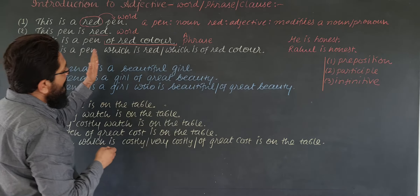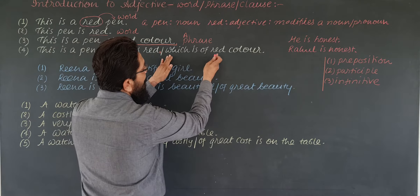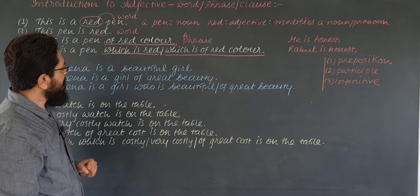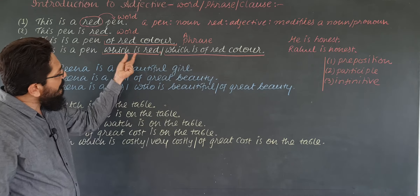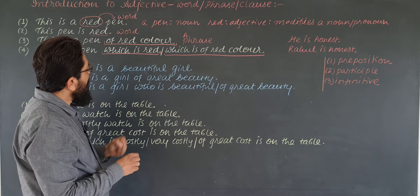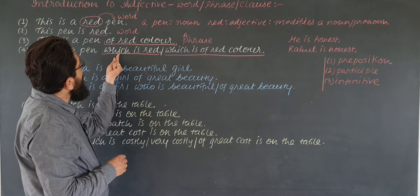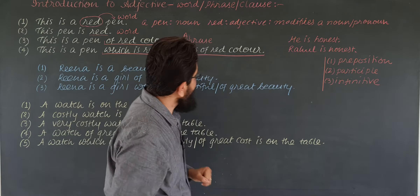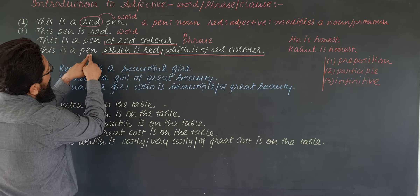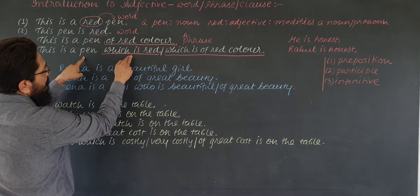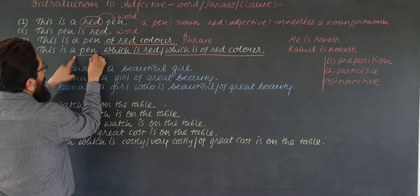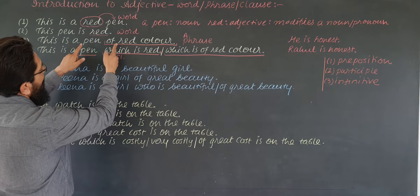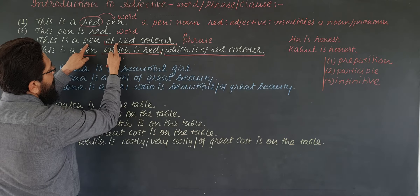Now read this sentence: 'This is a pen which is red, or which is of red color.' See — 'which is red' is a group of words, but here there is a subject-verb combination. This is subject, this is verb. If subject-verb combination is found, then it is not a phrase, it is a clause. This clause adds something to the meaning of noun 'pen' — which is red adds something to the meaning of a noun, so it is adjective clause.